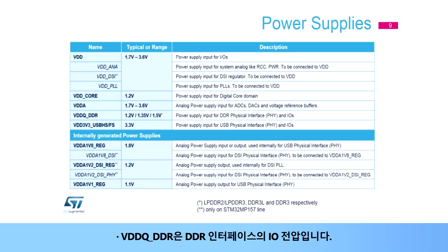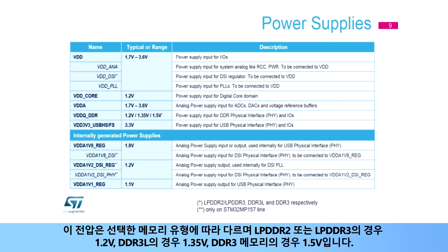VDD-Q DDR is the IO voltage for the DDR interface. This voltage depends on the selected memory type: 1.2 volts for LPDDR2 or LPDDR3, 1.35 volts for DDR3L, and 1.5 volts for DDR3 memories.